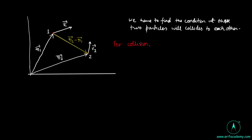That is, the velocity vector of particle 1 with respect to 2 must be along r2 minus r1 vector. That is, velocity v12 must be along r2 minus r1. Hence, the unit vector of v12 and r2 minus r1 will be same.